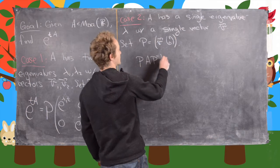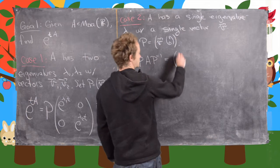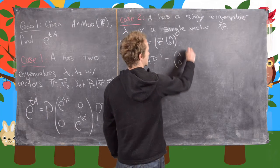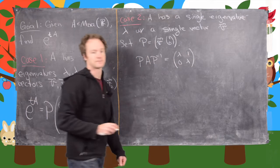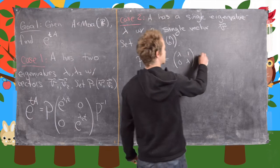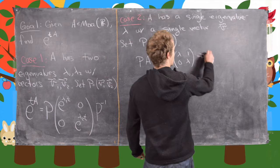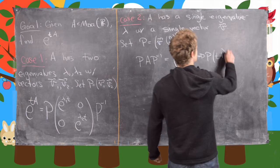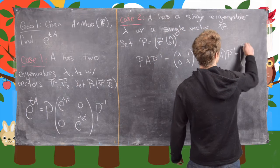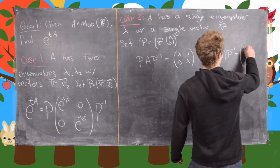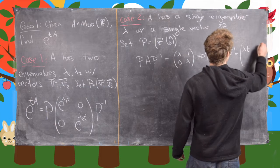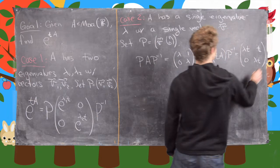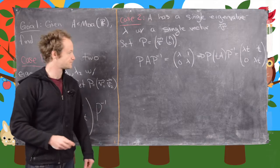In this setup, P inverse A P will be the matrix: lambda, 1, 0, lambda. Which tells us that P inverse times TA times P is going to be: lambda T, T, 0, lambda T. So that's how we get that variable in there.